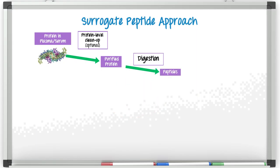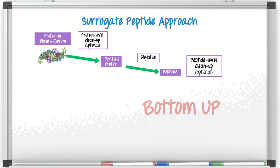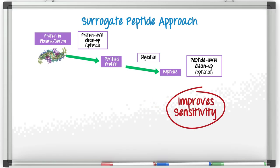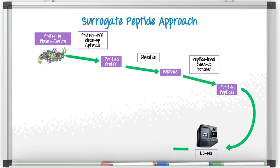After digestion, we end up with our peptides — those representative surrogate peptides — and that's the bottom-up approach. Next, you have a choice of whether or not to clean up at the peptide level. If you need additional sensitivity or want to remove digest reagents and salts, you might clean up at the peptide level using something like a mixed-mode SPE. Finally, you've got your purified peptides and you take them over to LC-MS, and ideally you get some good data out of it.